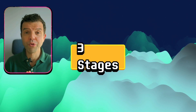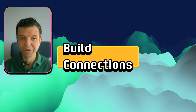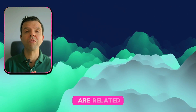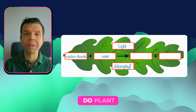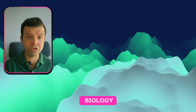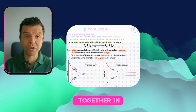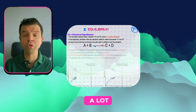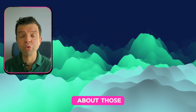We will divide the revision into three stages. During the first stage you will be building connections, so you'll study the topics that are related together. For instance, you could do plant nutrition and transport in biology, and you can do reaction rate and equilibrium together in chemistry. This should save you a lot of time, plus many of the exam questions ask you about those related topics together.